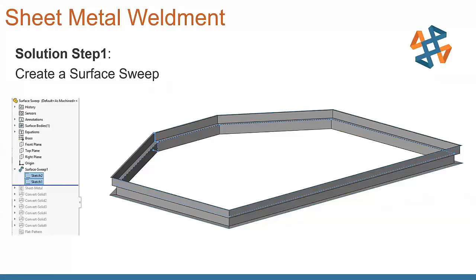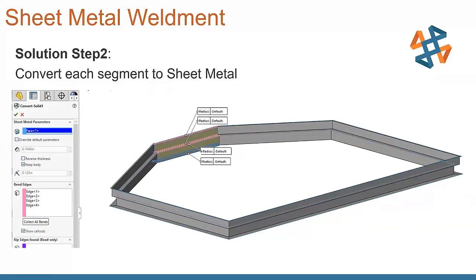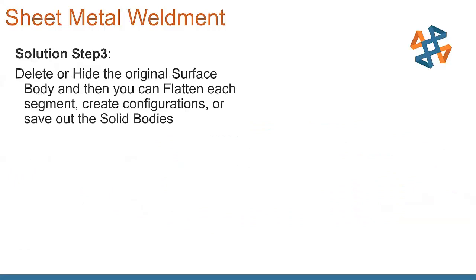Pretty simple solution here. Step one, we create a surface sweep to start off, and that gives us our outside shape and profile there. You can then use the SolidWorks Convert to Sheet Metal functionality. And you grab each segment and you turn each of those into sheet metal. You work your way around the part. When it's all said and done, you delete or you hide the original surface body.